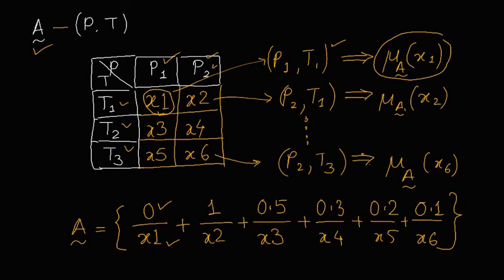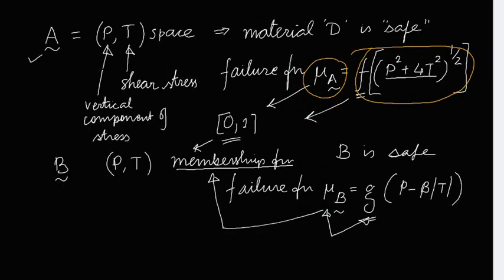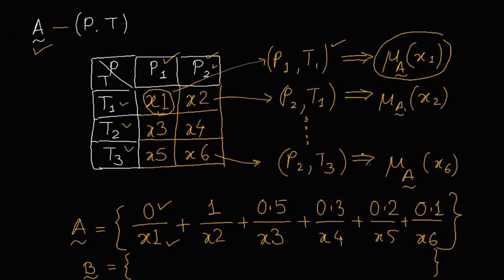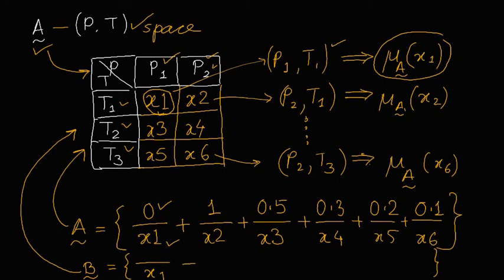Similarly, we can write for fuzzy set B using the function corresponding to this one. But the points in this space will be same for A as well as for B. These points in this space at which these membership values are being valued, those will be same.